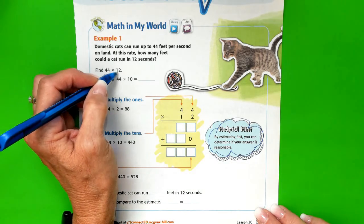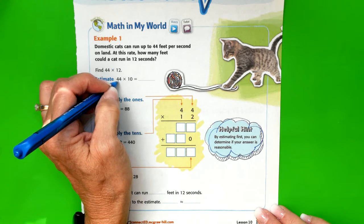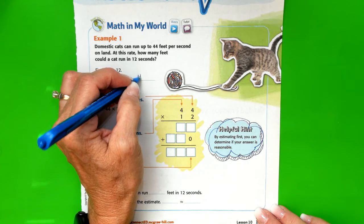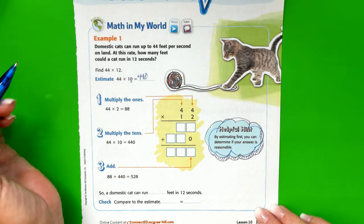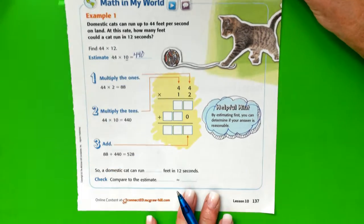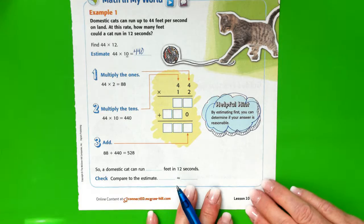We're going to keep 44. We're going to round down from 12 to 10. 44 times 1 is 44. We have one zero on a factor, so we need one zero on our product. Our answer is going to be somewhere around 440.